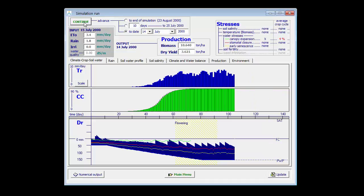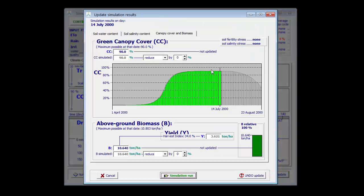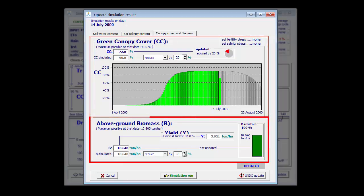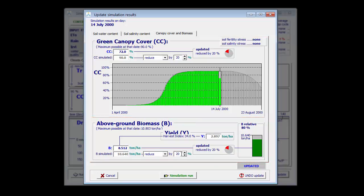I run my simulation again till that day, and then I use the update button to correct the canopy cover, which was reduced by 20%, and also the biomass produced so far was reduced by 20%.